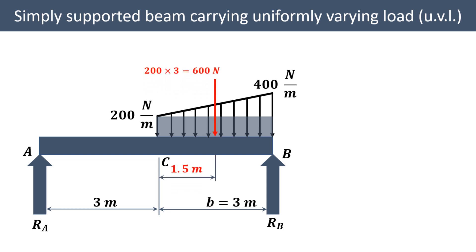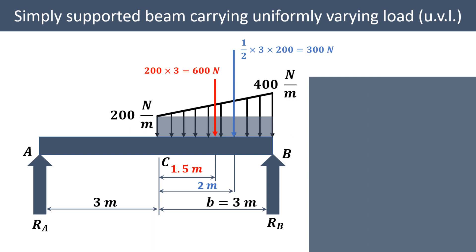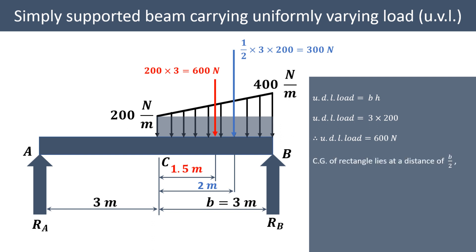Our first job is to find the UDL and UVL loads and the distances at which they act. For the rectangle, which has width 3 meters and height 200, the UDL load equals width times height, which is 3 times 200 equals 600 Newton. Since the centroid of the rectangle lies at half the width, the UDL load acts at B/2 = 3/2 = 1.5 meters from C.